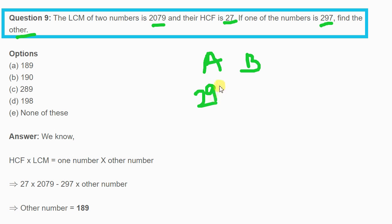Let us take two numbers A and B. One number A is 297 and B is the number to find. LCM of two numbers is 2079. LCM means all common factors are multiplied by each other. HCF is 27, which is the highest common factor that completely divides both numbers.